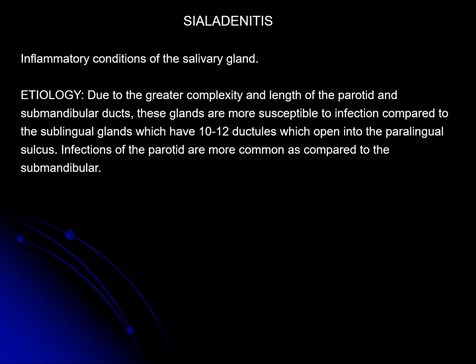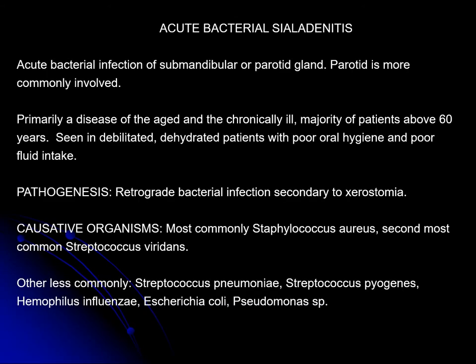Sialadenitis is an inflammatory condition. The main reason is the greater length and complexity of the parotid duct. The infection can spread. There are two types: acute and chronic. Acute bacterial sialadenitis is primarily a disease of the elderly and chronically ill, seen in patients 60 years and above. It is a retrograde bacterial infection. The causative organism is commonly Staphylococcus aureus or Streptococcus.